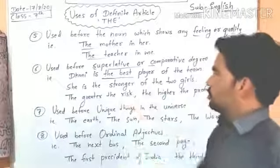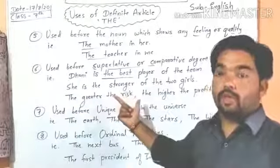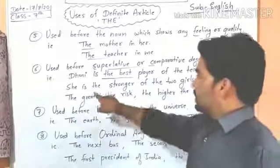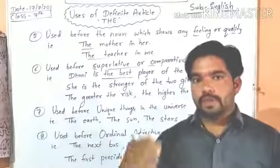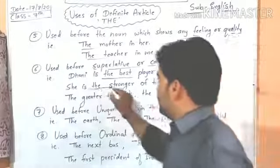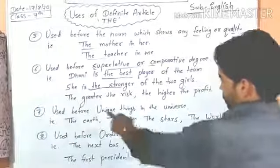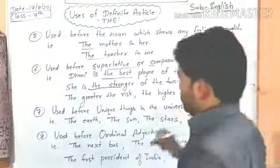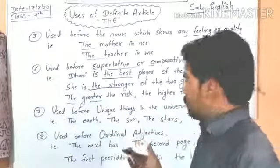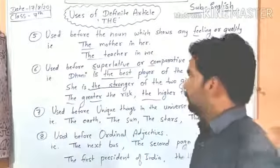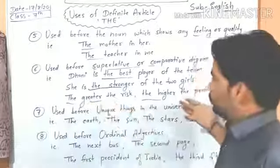'The' is also used before comparative degree in certain structures. For example: 'She is the stronger of the two girls' — दोनों लड़कियों में वो थोड़ी मजबूत है, so 'the stronger' uses 'the' before a comparative. Another example: 'The greater the risk, the higher the profit' — जितनी ज्यादा risk होगी, उतना ज्यादा फायदा होगा। Both comparatives take 'the.'